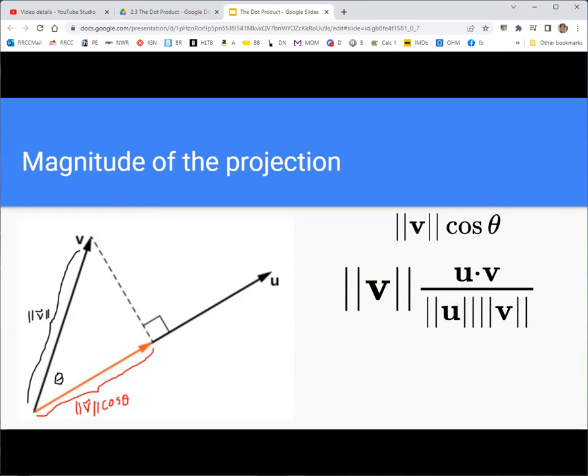And then when you look at this formula, you can actually cancel these magnitudes of v because there's two of them and they're the same and one's in the top of the fraction and one's in the bottom. So the simplified version just has u dot v over u. So u dot v over u is going to be the magnitude of this projection.